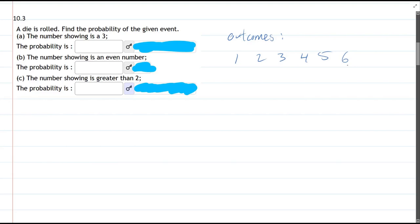And then we have to decide which one or ones are favorable, and we're doing part A first. So first one is, the number showing is a three.